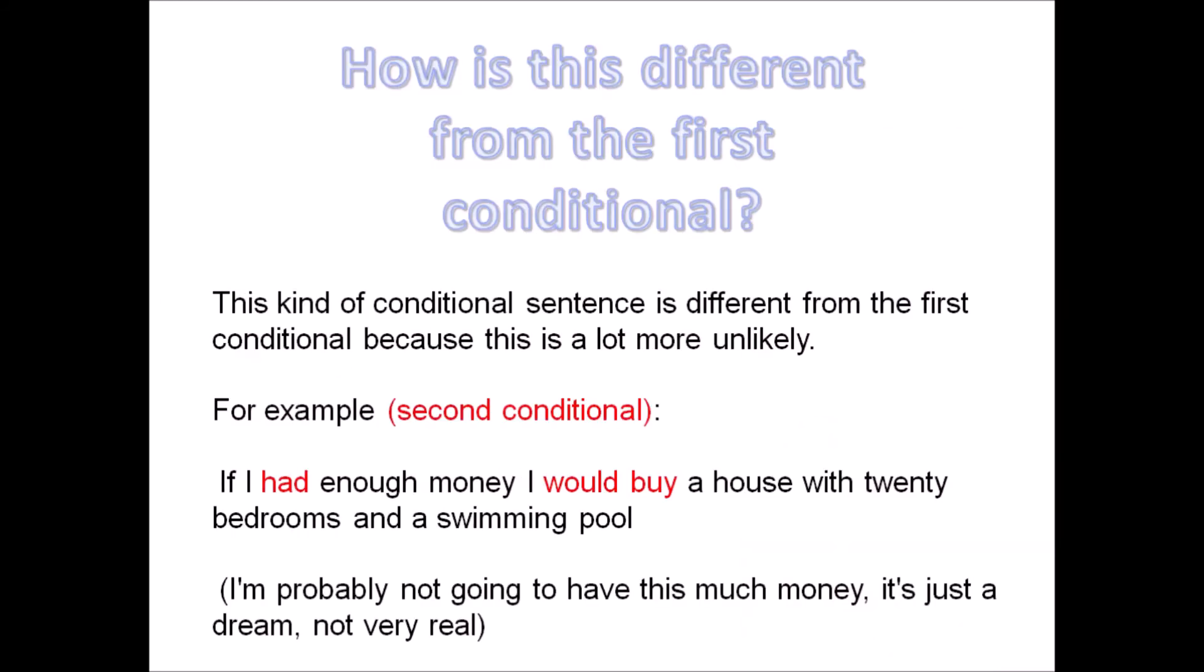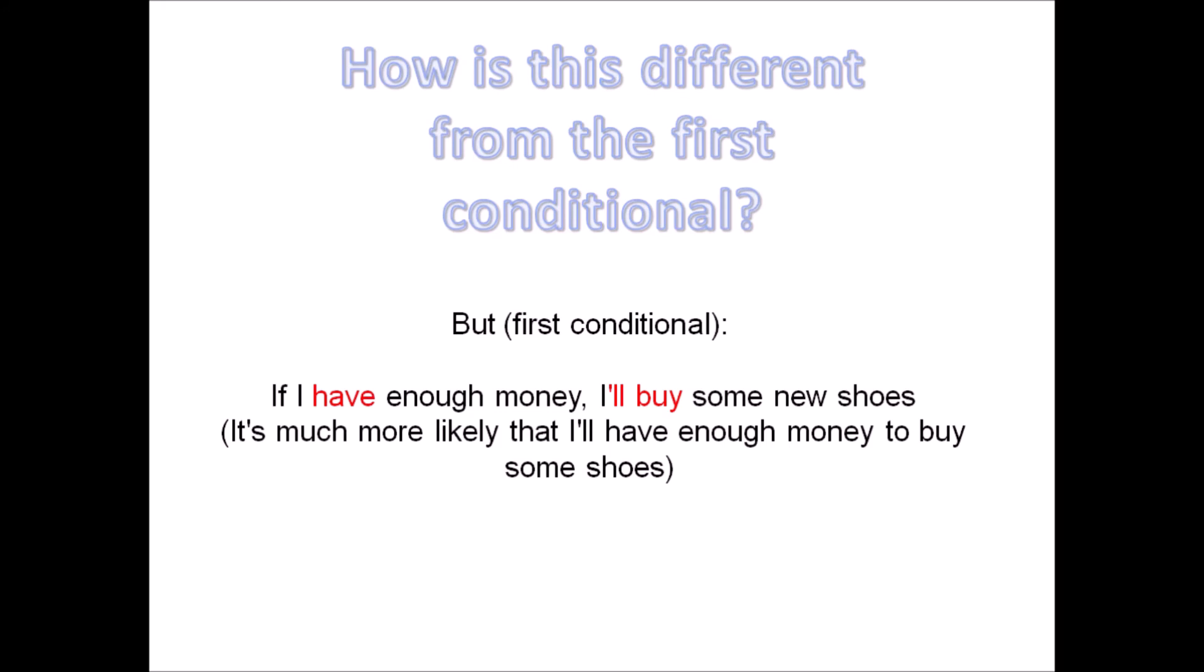But now you ask me, teacher, how is this different from the first conditional? So this kind of conditional sentence is different from the first conditional because this is a lot more unlikely. For example, the second conditional. If I had enough money, I would buy a house with 20 bedrooms and a swimming pool. So I'm probably not going to have this much money. It's just a dream. It's not very real. But the first conditional is if I have enough money, I will buy some new shoes. It's more likely that I will have enough money to buy new shoes than I would buy a house with 20 bedrooms.